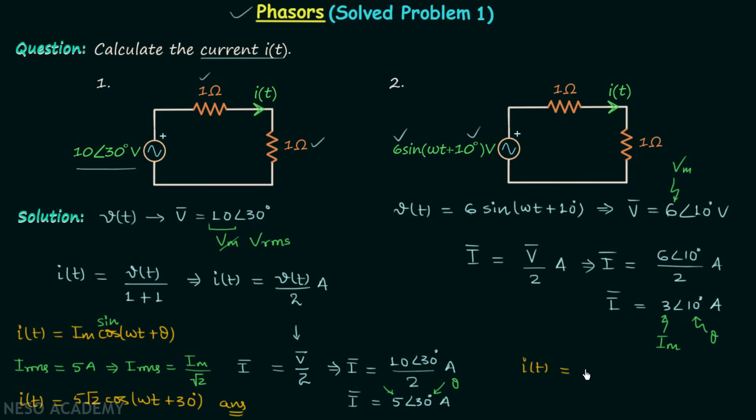We can now have our current it. It will be IM sin - this time we are having sin because sin is given in the question itself, it is the parent signal - omega t plus theta. So finally we will have it equal to 3 sin omega t plus 10 degrees, and the unit will be amperes. This is our answer. So now I hope you understand how to deal with phasors and the sinusoidals given in the question.